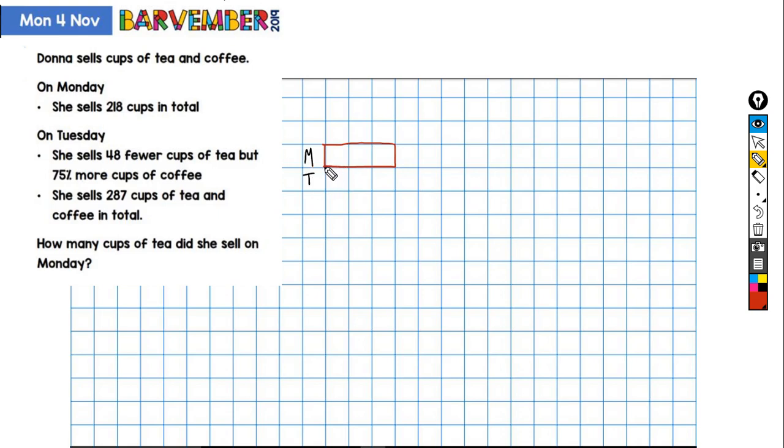Now I'm going to draw something for Tuesday. What I'm going to do is first draw a bar that's the same size. Now, we know first that that's wrong. Why is that wrong? Because she sells 48 fewer cups of tea on Tuesday. So what I'm going to do is draw a line in here. Again, as the size of this was arbitrary, so is where I've put this. I'm going to shade this. And then this is the 48 fewer cups of tea that were sold on Tuesday.